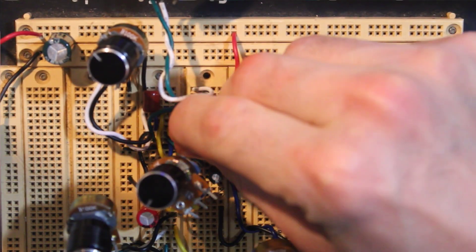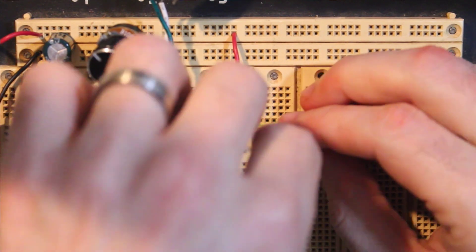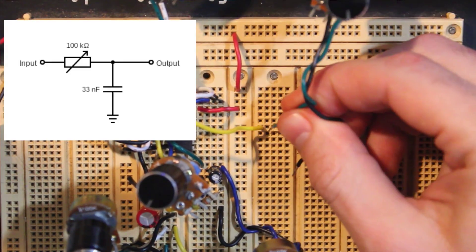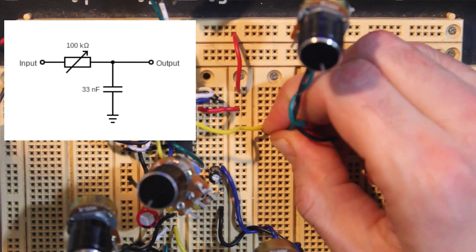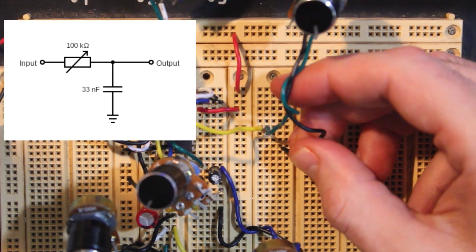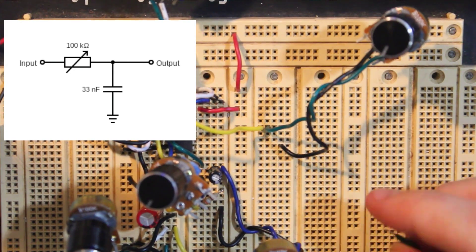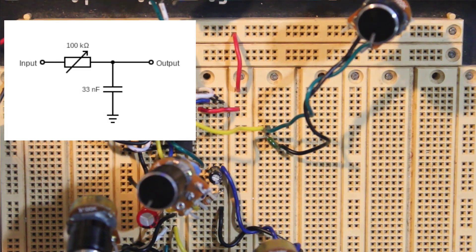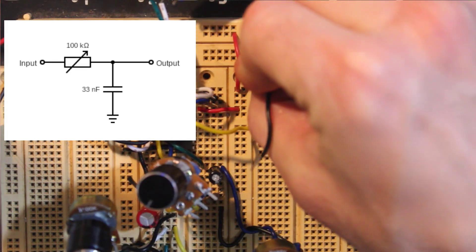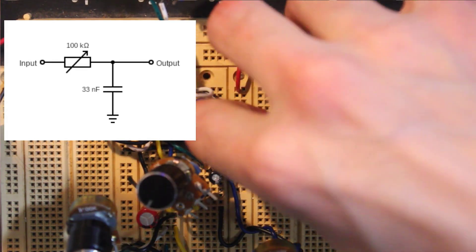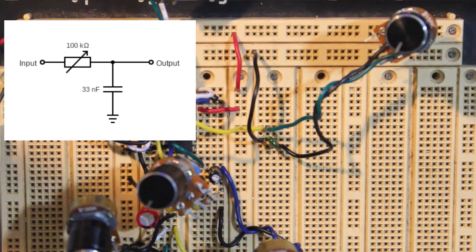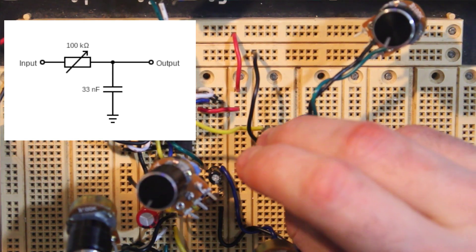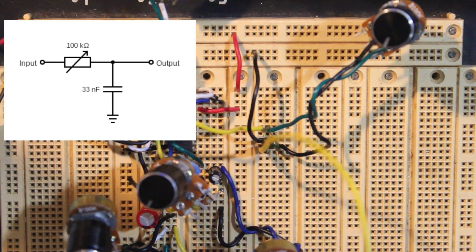Here I'm taking the output from our 4106 chip and adding a potentiometer in series with it. Now adding one leg of the capacitor to the other end of the potentiometer, the other leg will go to ground. Back at the junction of the capacitor and potentiometer, which is the output, I'm adding a jumper to our volume control circuit.